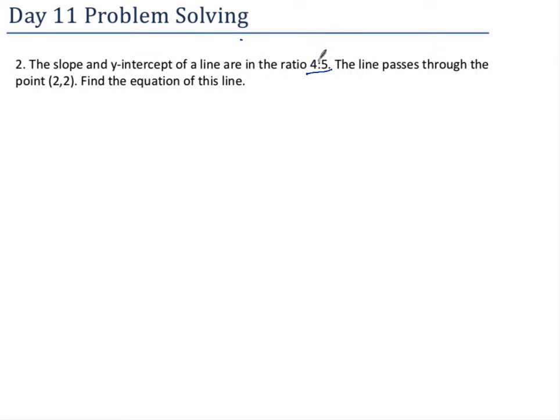Okay, so often with the ratio we can call it like 4x and 5x or something like that, or in this case I'm going to call it 4a and 5a, where a is like one part of the ratio. That'll help us. Now we can set up the equation. We have a point, and we have the slope and y-intercept, so I'm going to use slope-intercept form. So I can write it as y equals 4ax plus 5a.